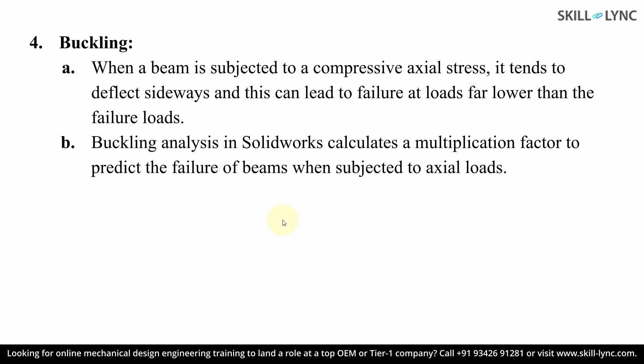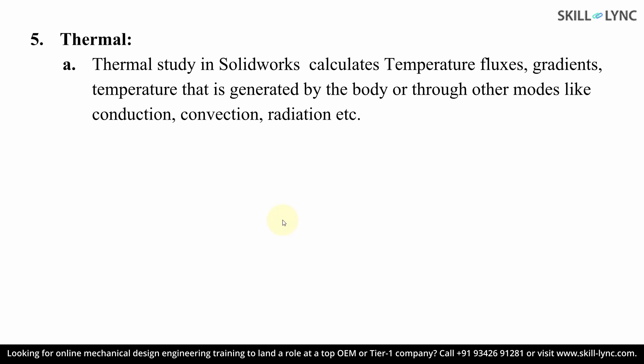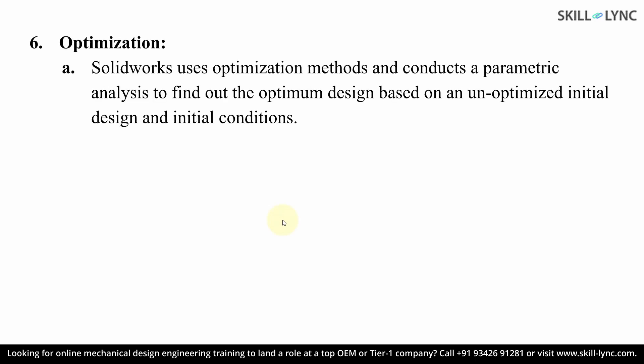In the buckling module, apart from failure due to material strength, a lengthy member like a beam can fail due to axial instability. SOLIDWORKS helps us visualize failure of a model subjected to axial load by calculating the buckling load factor to predict failure. In the thermal module, we can study temperature gradients and temperature fluxes in the body due to loads like conduction, convection, and radiation. In the optimization module, every FEA is performed to obtain an optimum design — whether the least mass or the least stress — and the solver iterates between different dimension values to arrive at optimum design parameters.